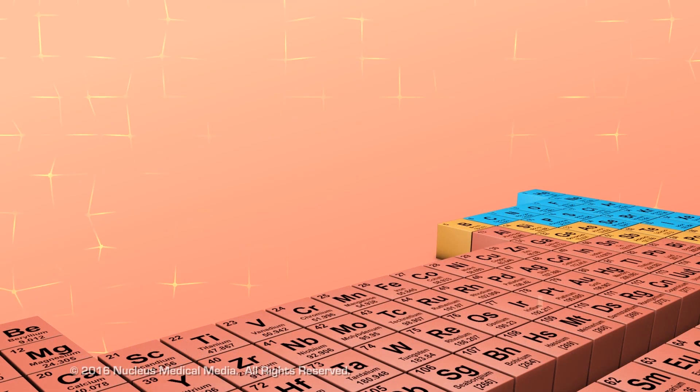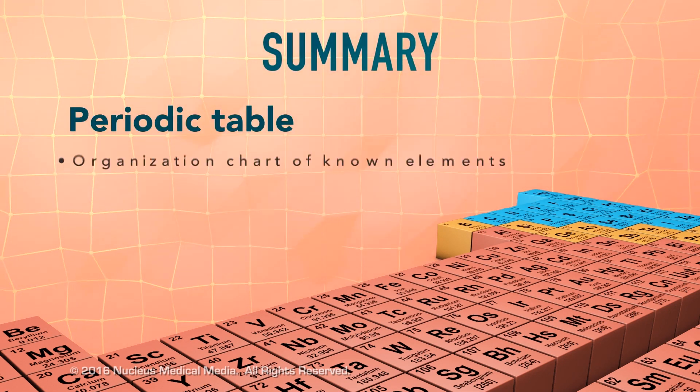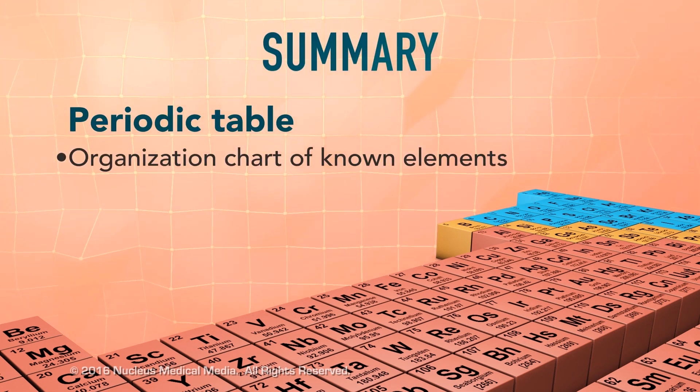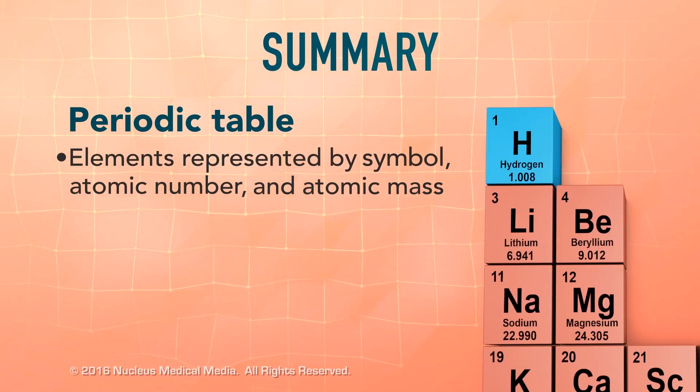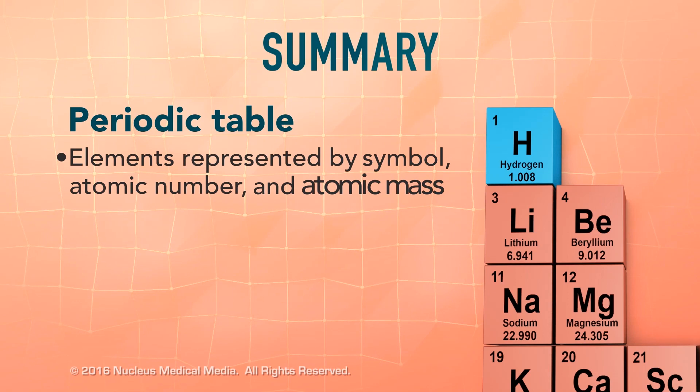In summary, the periodic table is an organization chart of all the known elements. Each element is represented by its symbol, atomic number, and atomic mass.